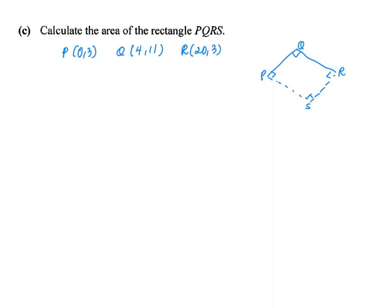Next, part C, they ask us to calculate the area of the rectangle PQRS. So I know that PQRS is a rectangle, and if I want to find the area of a rectangle, it will be taking the length times breadth. Actually, we need to find the magnitude or rather the length of PQ.